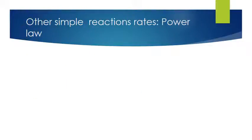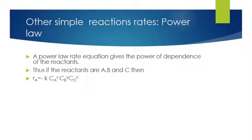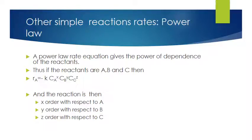Another very simple rate equation arises when the reaction is governed by power law kinetics. A power law rate equation gives the power dependence of the reactants. If we have reactants A, B, and C, then the rate of formation of A would be minus K times C_A to the power X, times C_B to the power Y, times C_C to the power Z, where the order of reaction is X with respect to A, Y with respect to B, and Z with respect to C.